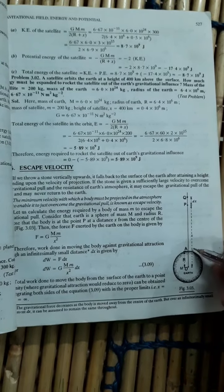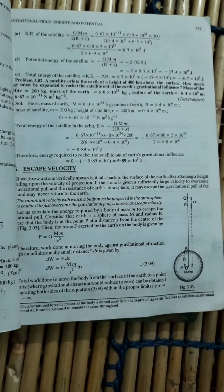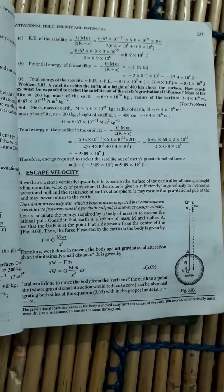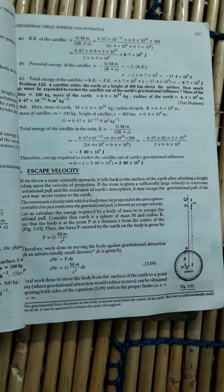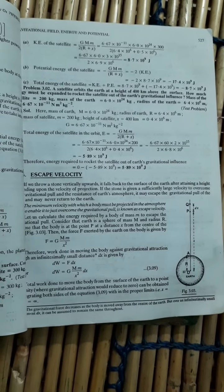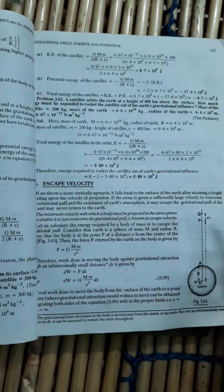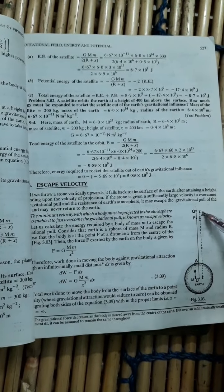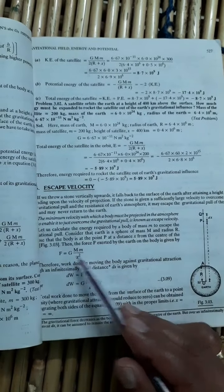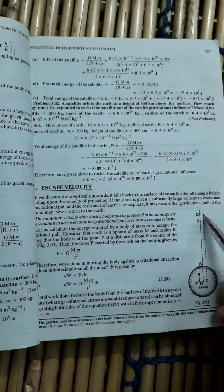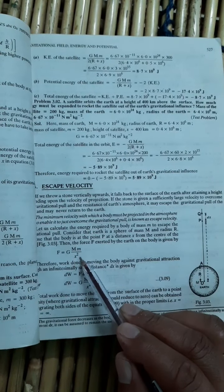It means you are throwing an object from the surface of Earth in such a way that it cannot return to the surface of Earth. It means it will go away from the gravitational field of Earth. So that velocity is called escape velocity. You know, suppose at x distance, what is the limit of gravitational field? What will the gravitational force at x distance be? That is F is equal to capital G m into m upon x square.